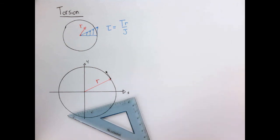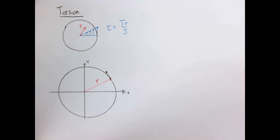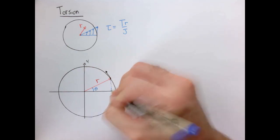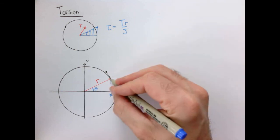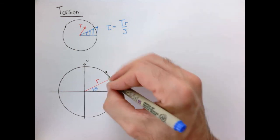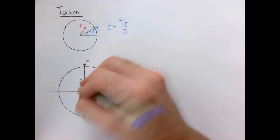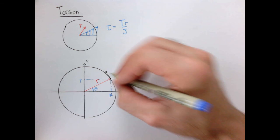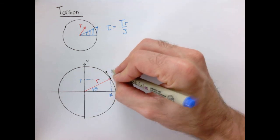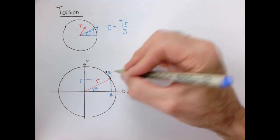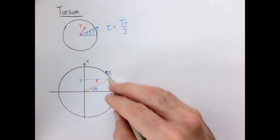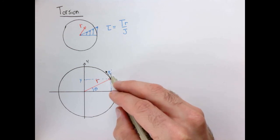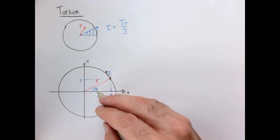Here's our radius, and we have an angle theta. This is the value of x along the circle, and here's the value of y. If we look very carefully, we can see that this angle here is also theta. So the angle that the tangent vector makes with the circle at any point is going to equal this angle. This angle here and this angle here are both theta.